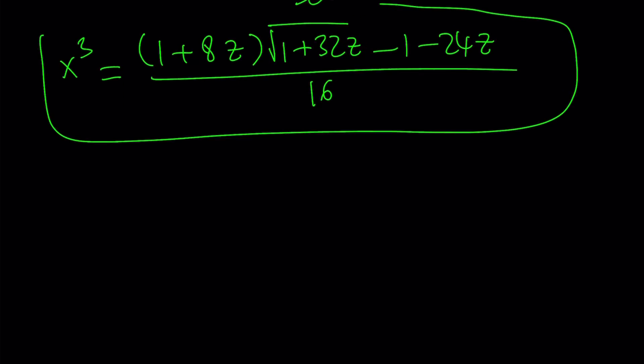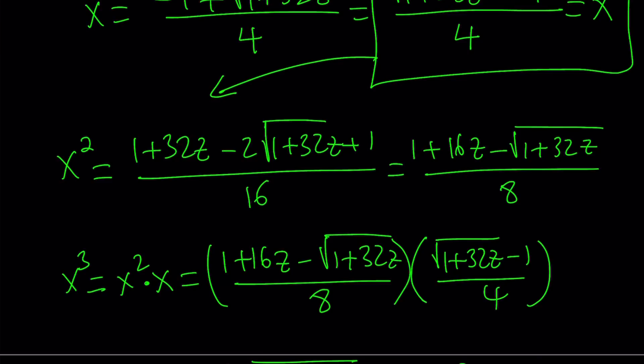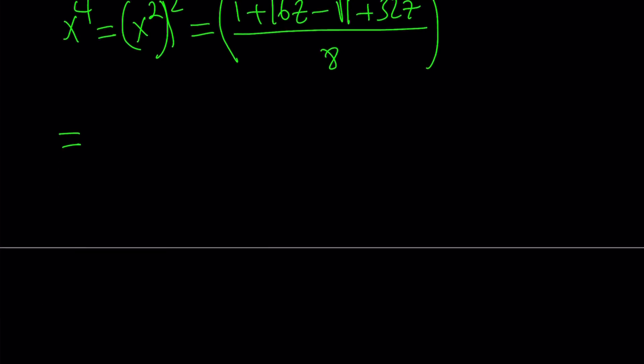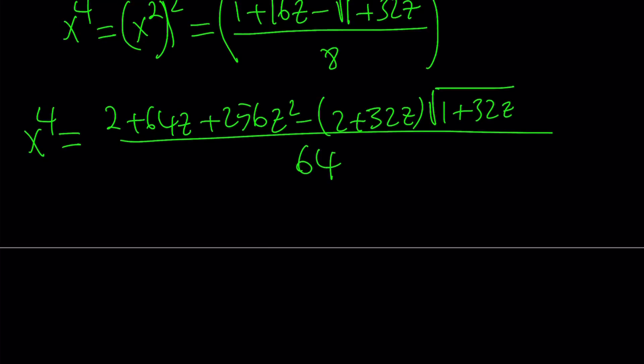Now I want to find x to the 4th. This is x to the 3rd power. I have something for x squared. What is x to the 4th power? That is x squared squared. So let's replace x squared with what it is: 1 plus 16z minus square root of 1 plus 32z all over 8. Now I'm going to square this expression. Let me skip some steps and give you what we get. x to the 4th is 2 plus 64z plus 256z squared minus 2 plus 32z multiply by the square root of 1 plus 32z, all divided by 64.